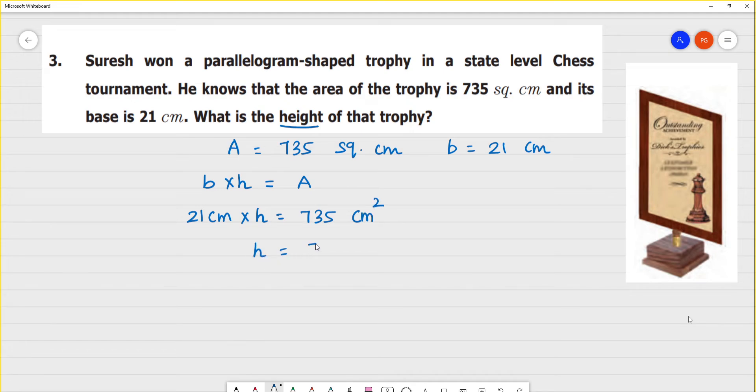Now, height is equal to 735 centimeter square divided by 21 centimeters. Centimeter here, one centimeter cancels.